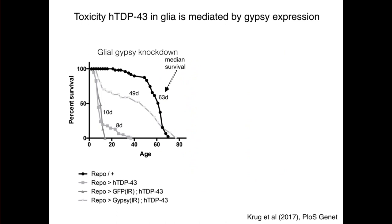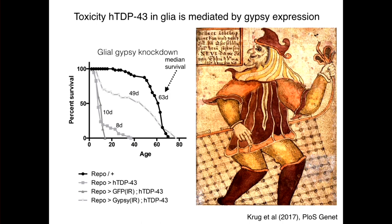We focused on GYPSY. When we overexpress TDP-43 in glial cells, we see a really disastrous effect on the organisms — median survival of wild-type animals is about 63 days, and TDP-43 expression in glial cells dramatically reduces this. When we express an RNAi transgene to knock down just GYPSY, we get a remarkable restoration of lifespan. We also showed reduced TUNEL labeling, suggesting reduced cell death. To get at mechanism, we used the so-called Loki gene — named after the Norse trickster god — which in flies codes for CHK2, a signaling molecule that detects DNA damage and signals for apoptosis.